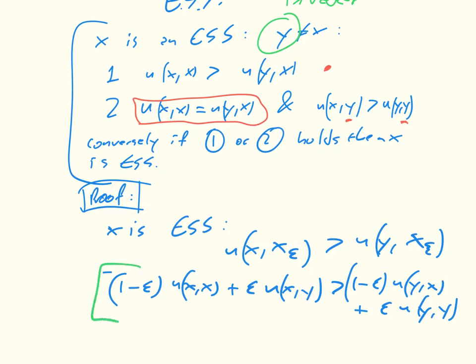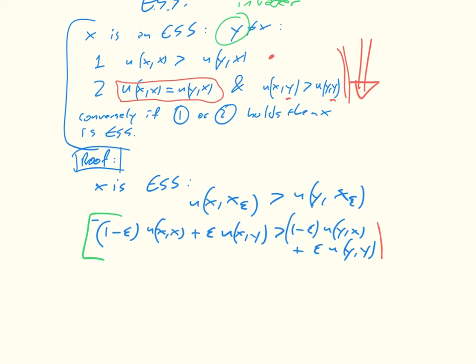And now what we're going to do is we're going to go first through this proof this way. Okay, so we're going to see if these two things holds, does this inequality hold? And we can more or less just see that because we can say if one holds, then the utility of x in x is greater than the utility of y in x. And we can just say for epsilon small enough,